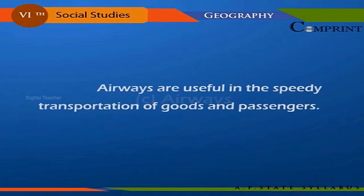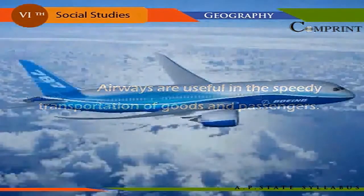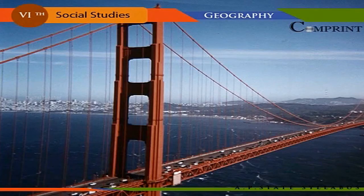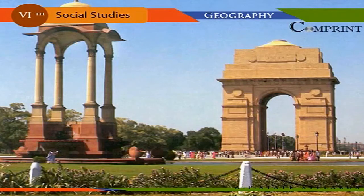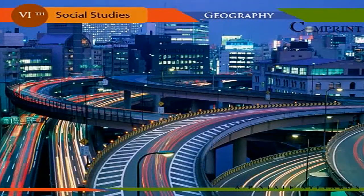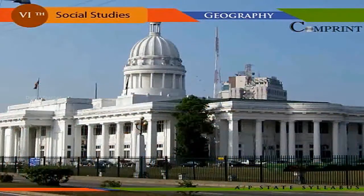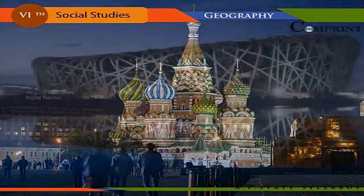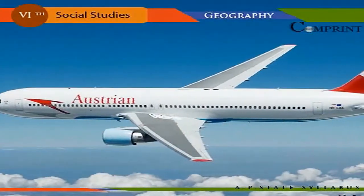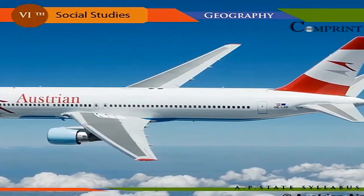Airways are useful for the speedy transportation of goods and passengers. The important international air routes in Asia are: Singapore to San Francisco; New Delhi, Mumbai, Kolkata, and Colombo; Tokyo, Manila, Hong Kong, Bangkok, Colombo, Mumbai, and Delhi; and Muscat to Beijing via New Delhi and Kabul. Domestic air routes have also been developed in many countries of Asia.